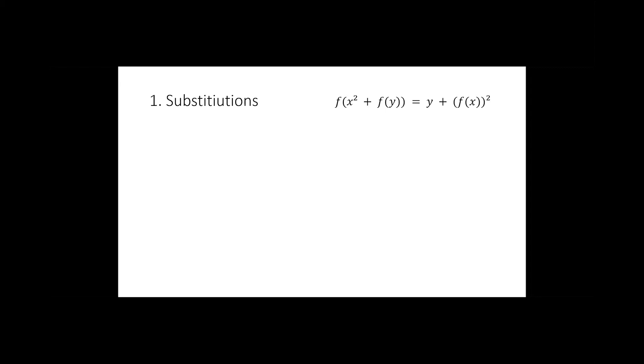In our case, if we set both variables to zero, we get an equation between two constants which does not look very useful. If we set y to zero, we get an equation which might be useful in future. But if we substitute zero for x, we get another equation, which will in fact be useful.